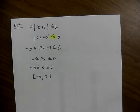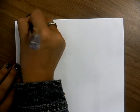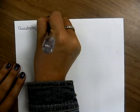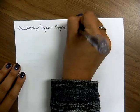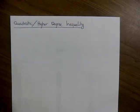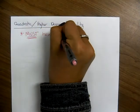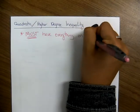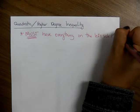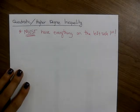Any questions on absolute value? Let's move on. We're going to talk about one more type — this one is probably the most tricky to get the hang of: quadratic and higher degree inequalities. Make yourself a special note: you must have everything on the left side first. Before you do anything else, move everything to the left — the right side has to be a zero, always.